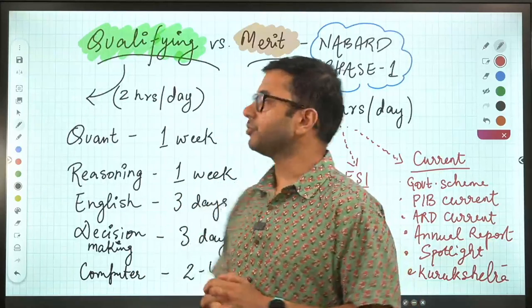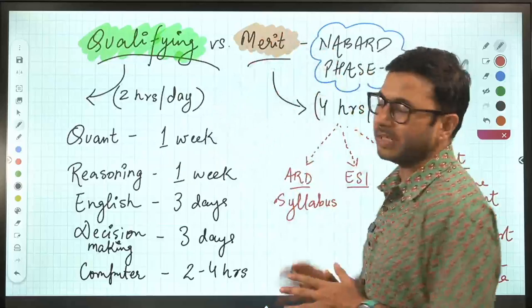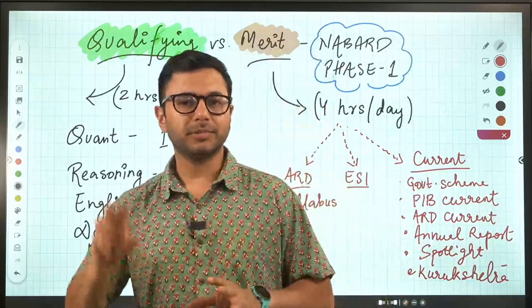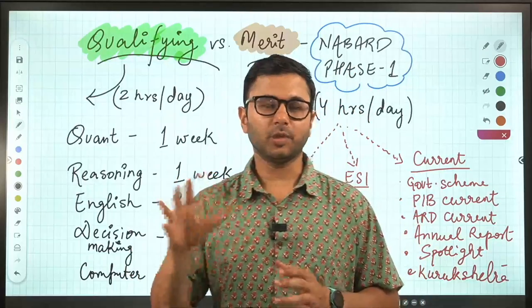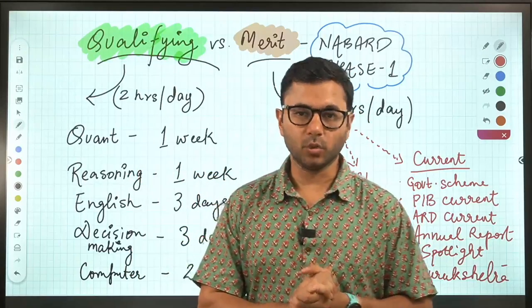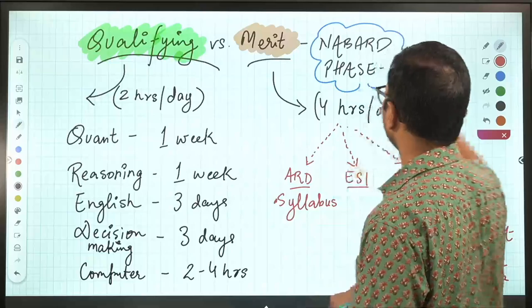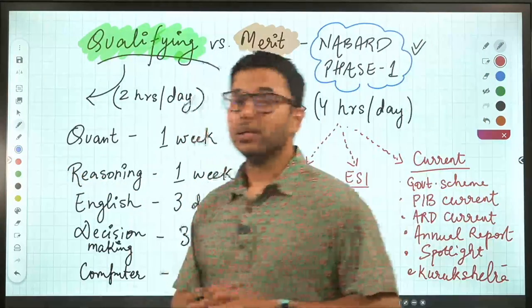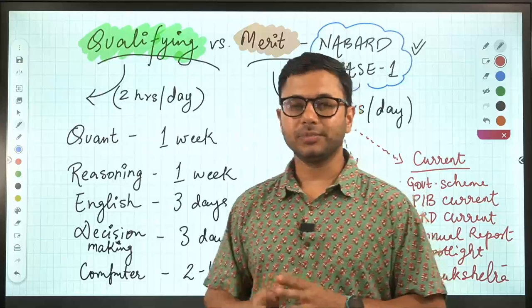And that is the balance between qualifying versus merit subjects. I am assuming that you know what are the qualifying subjects and what are the merit subjects when it comes to Phase 1 of NABARD 2022. Specifically, we are talking only about Phase 1 because in Phase 2, as you all must be aware, all the subjects are merit subjects. There is no qualifying.